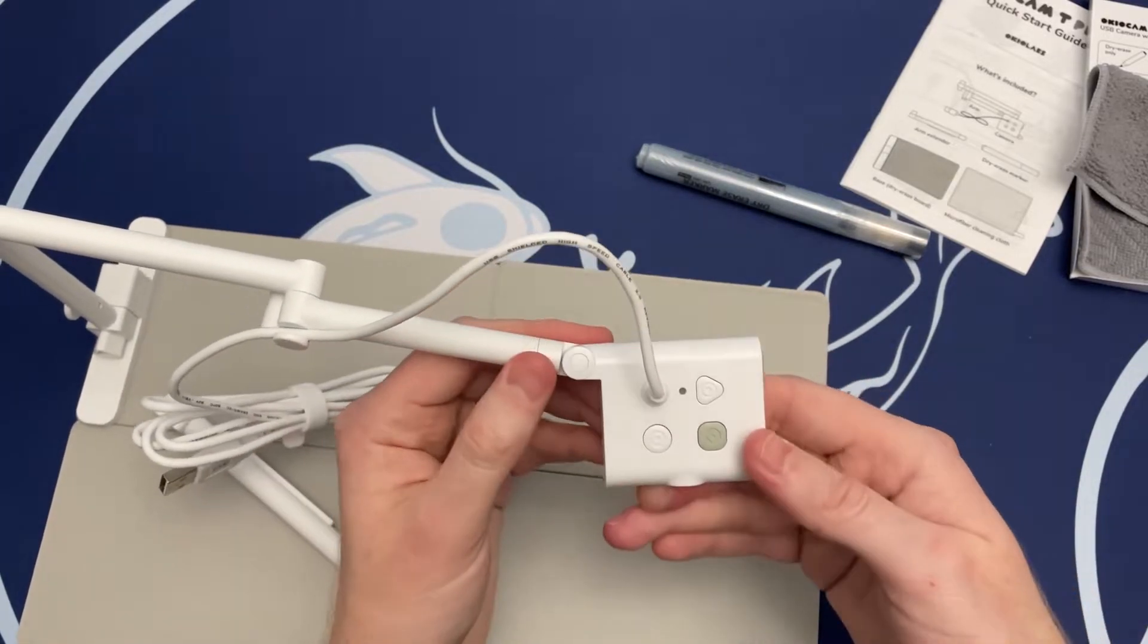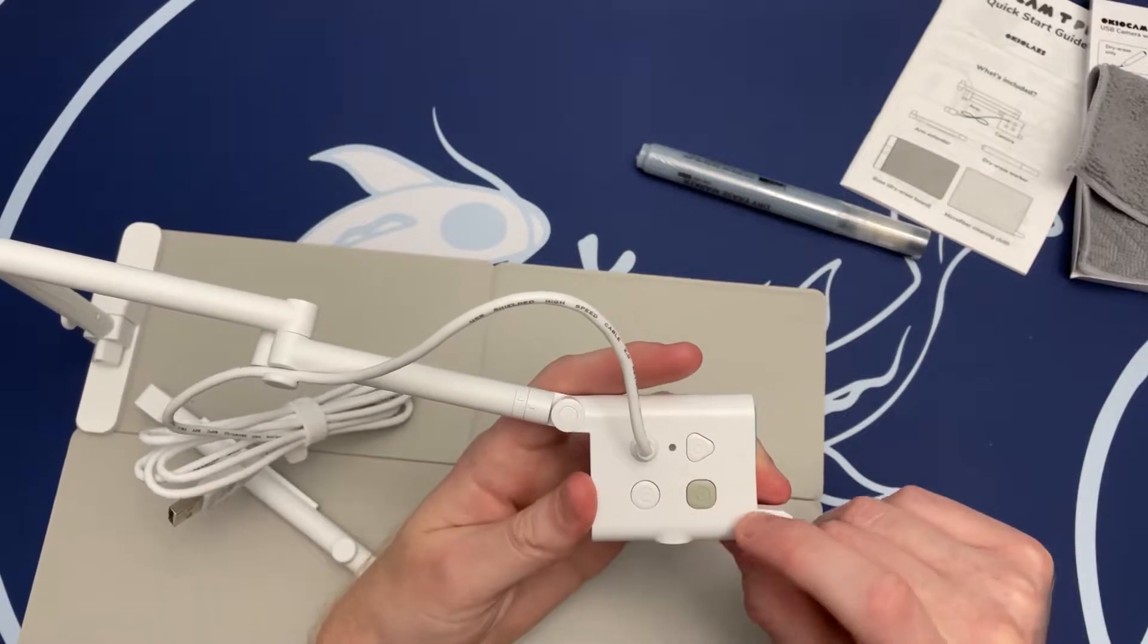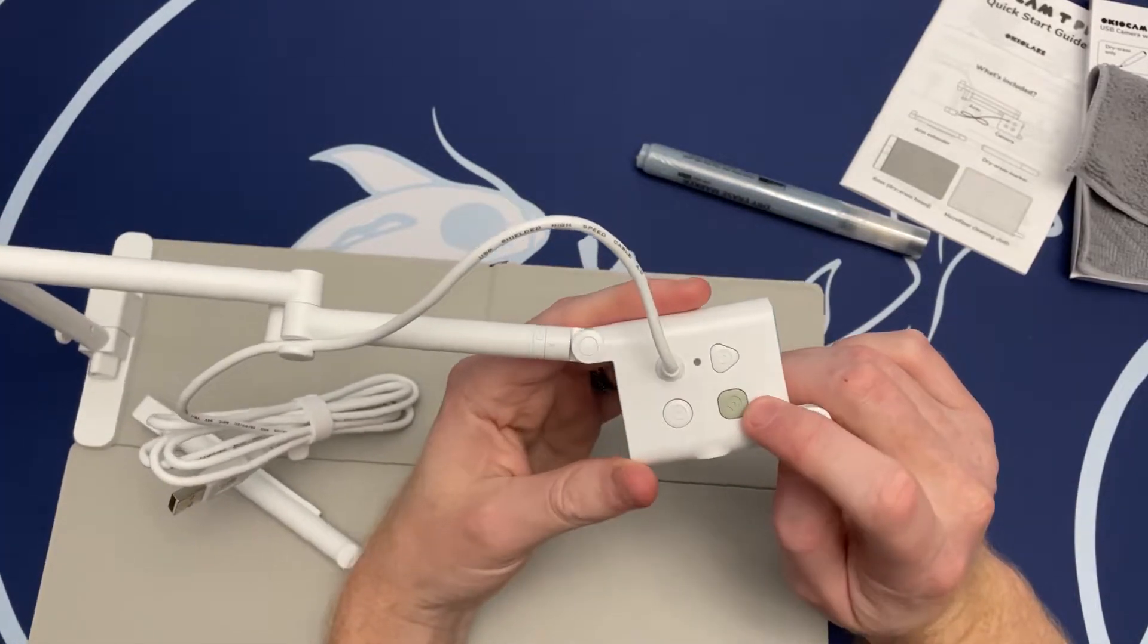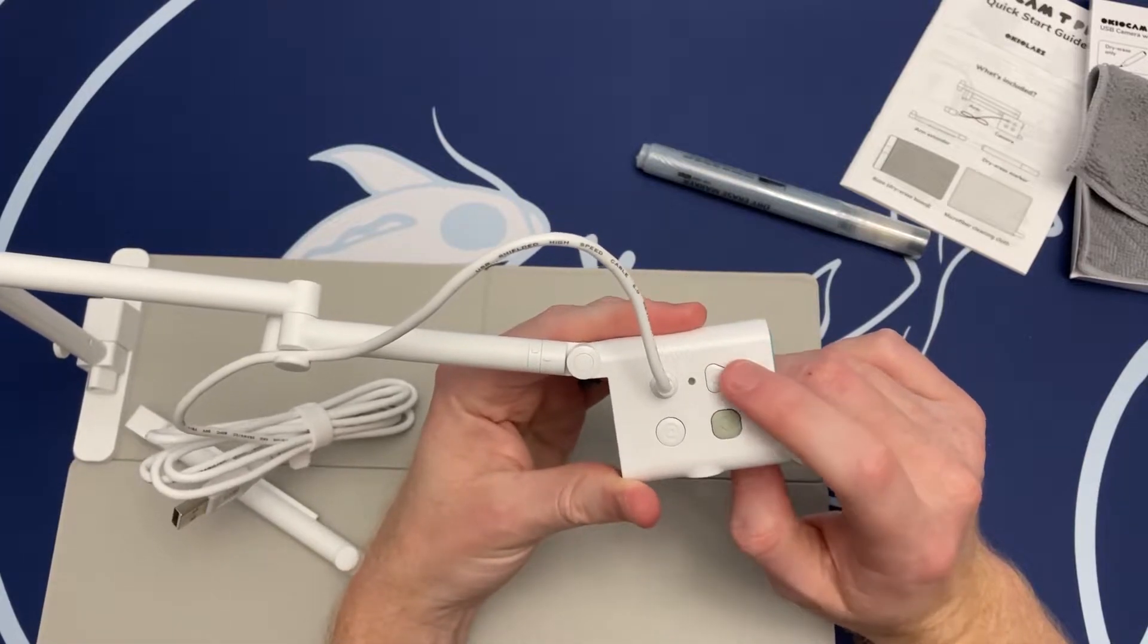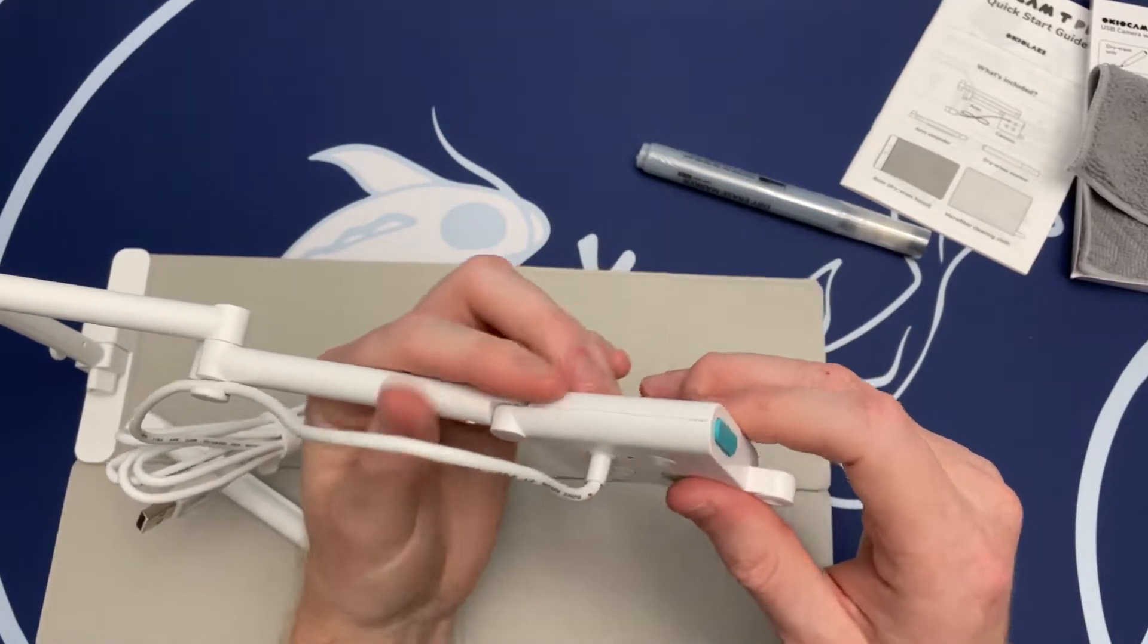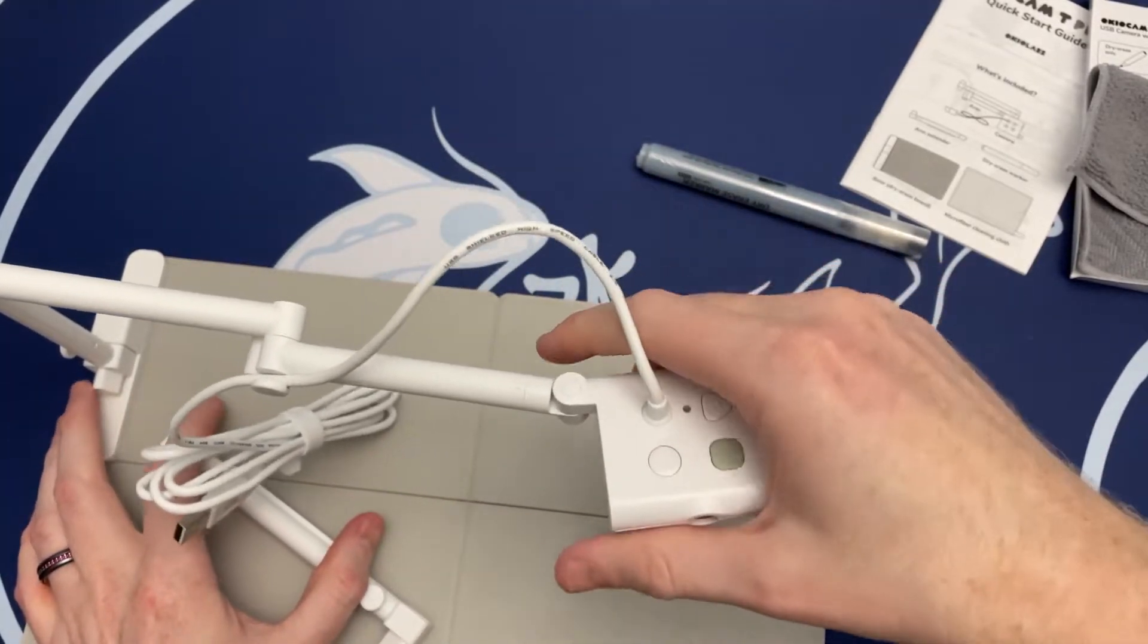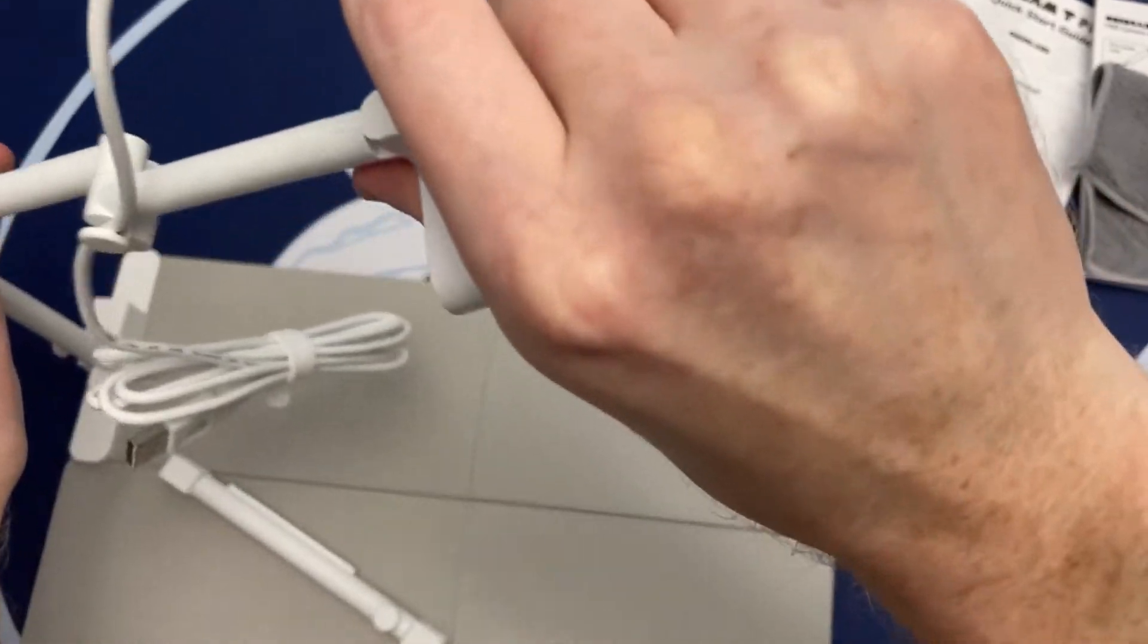And here are those buttons. So we have three different buttons. One button is going to be an auto kind of adjust picture quality, a zoom in and out, and then auto exposure button. And then up here is to flip the camera around 180 degrees. So we're going to see how that does actually.